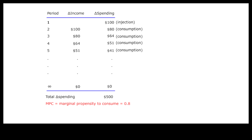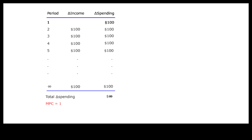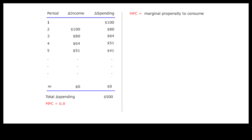When the additional spending is close to zero after many rounds, the multiplier process finally stops. The total additional spending amounts to only five times the initial stimulus injection because the marginal propensity to consume is only 80% instead of 100%. The difference between a multiplier of infinity and a multiplier of 5 thus depends on the magnitude of the MPC and the inverse of MPC — namely the marginal propensity to save — since what additional income is not spent on consumption is saved.